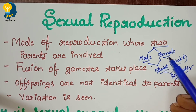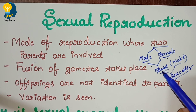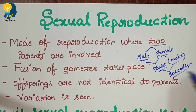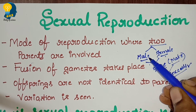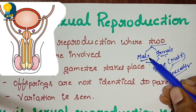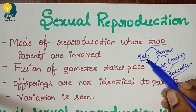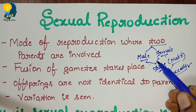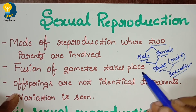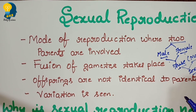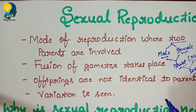Sex between the male and the female is involved. As a result of the sex, that is the fusion, the fusion of male and female gametes takes place. Gametes are nothing but the specialized sex cells. They are present in the male reproductive organ and in the female reproductive organ. These sex cells fuse, and as a result of fusion of gametes, the new organism is born or formed.